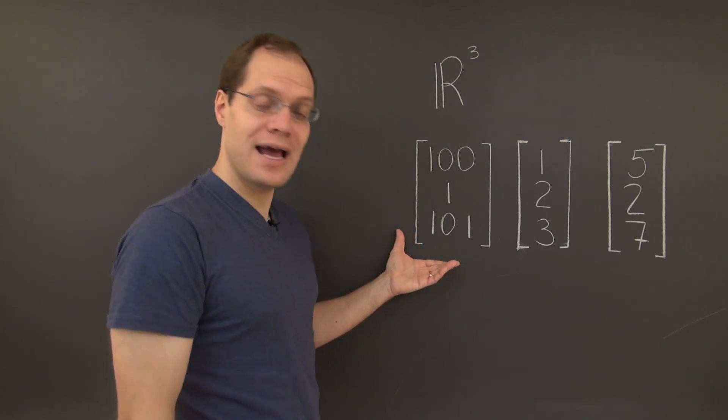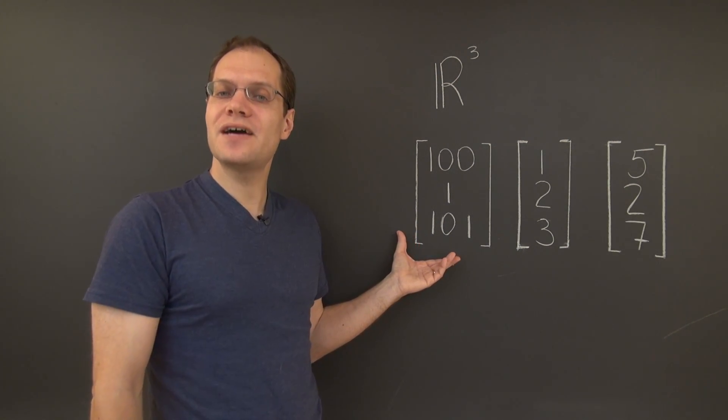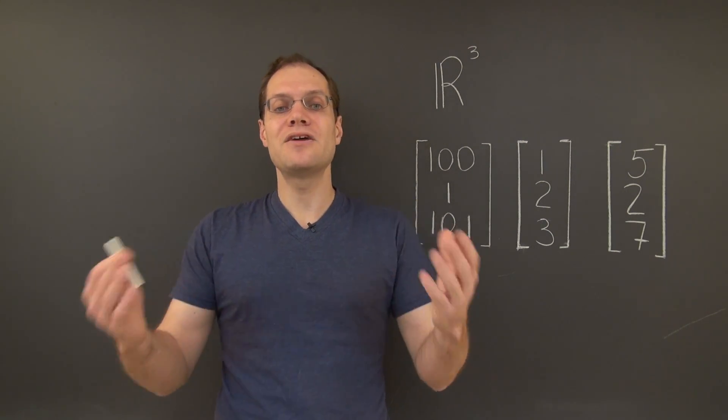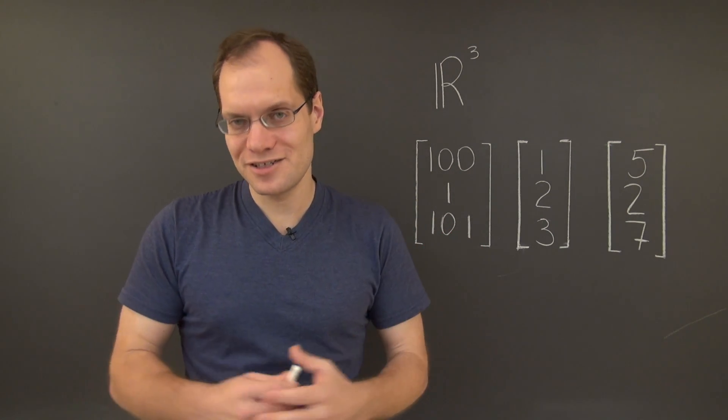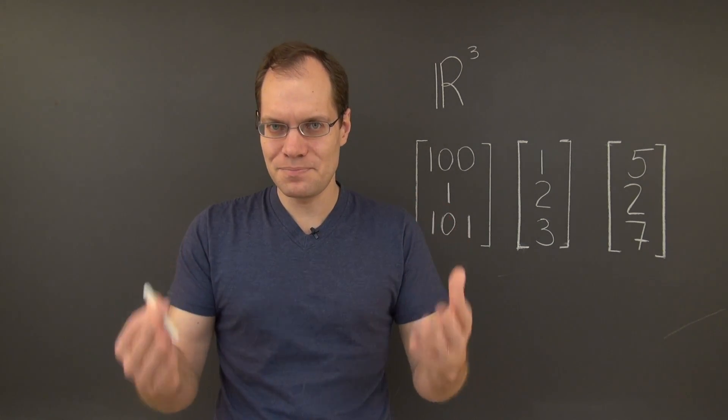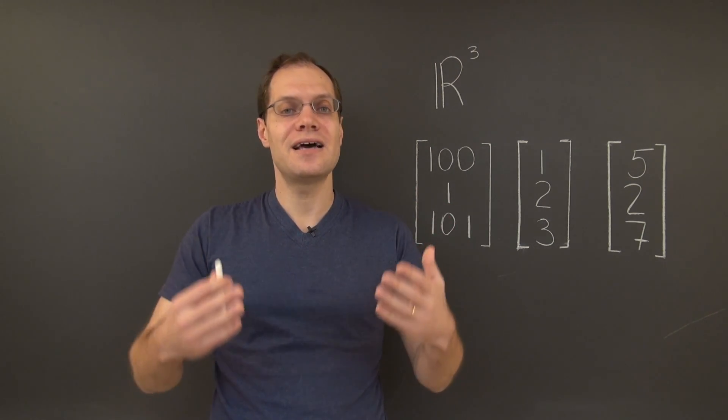And what we now have, then, is three vectors in a two-dimensional space. And by the argument that we've explored thoroughly so far, these vectors are necessarily linearly dependent. So we have arrived at our conclusion.